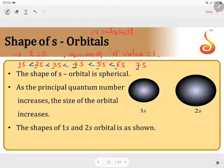So this is the order of size. Therefore, as the principal quantum number increases, the size of the orbital increases. They have given an example. The shapes of 1s and 2s orbitals are shown in the figure.